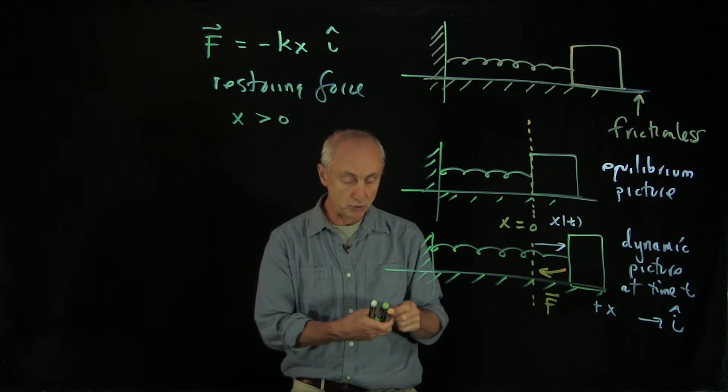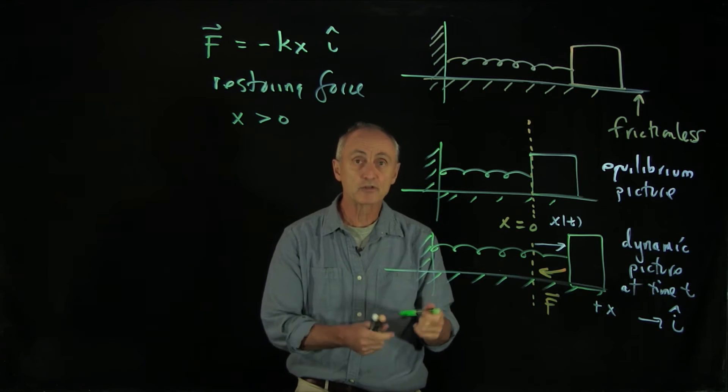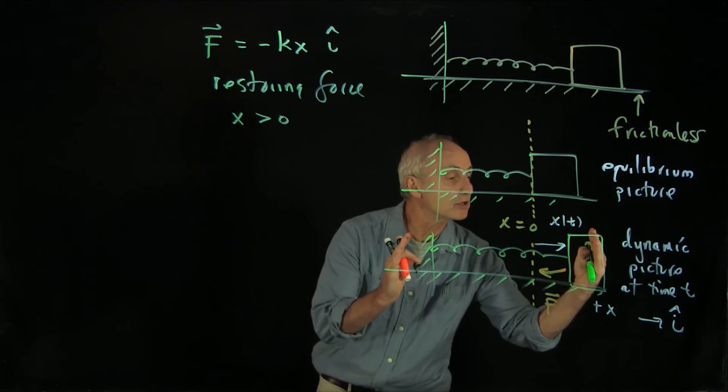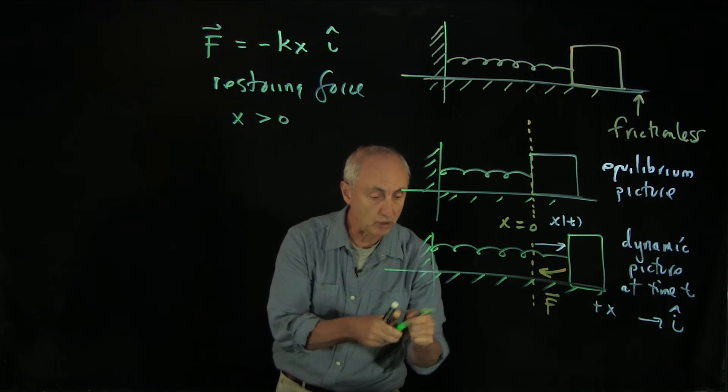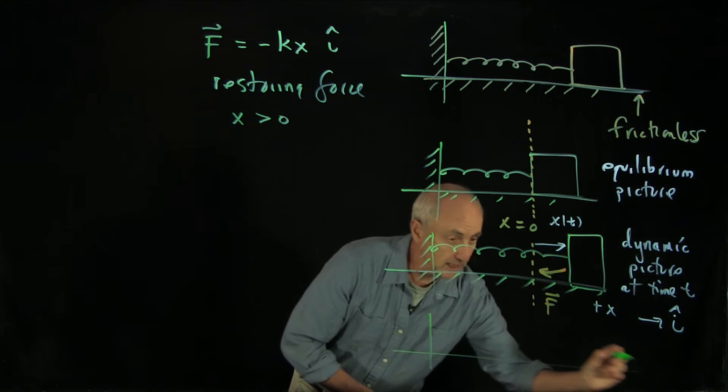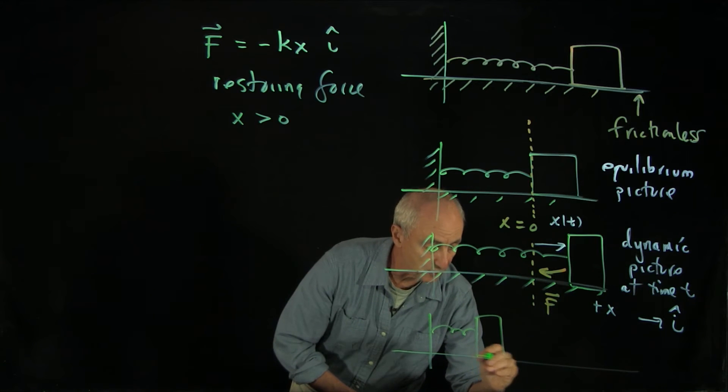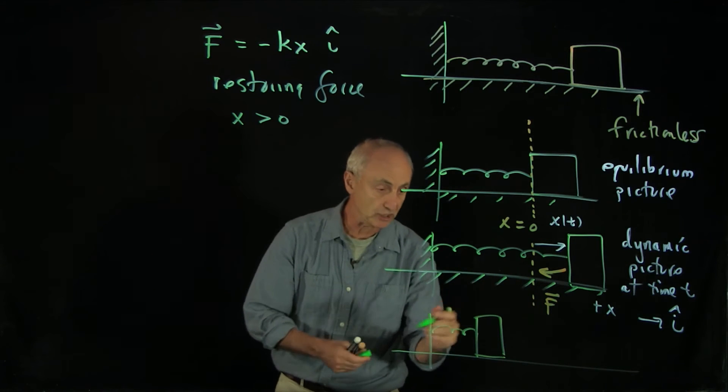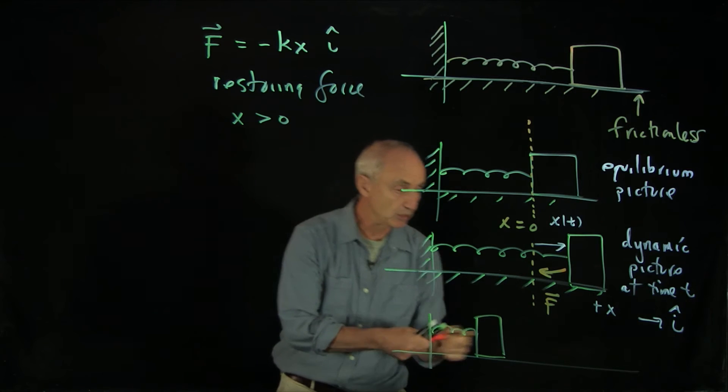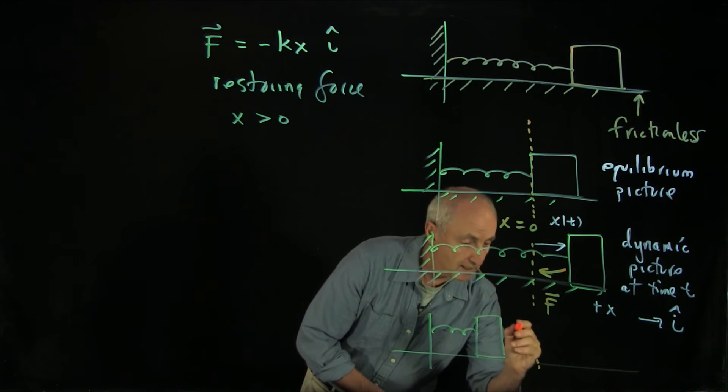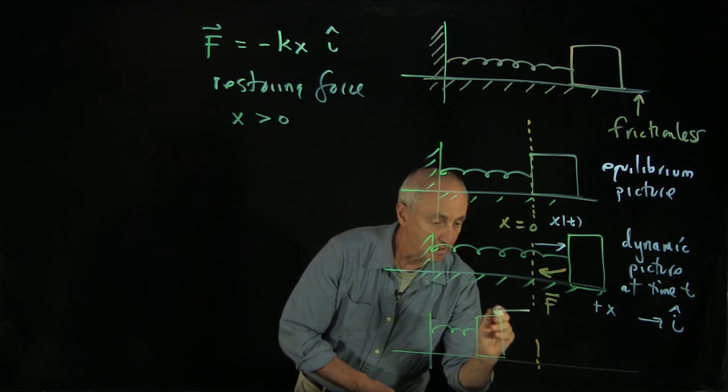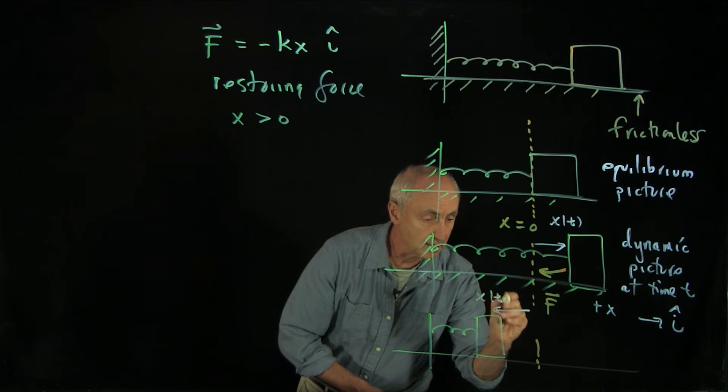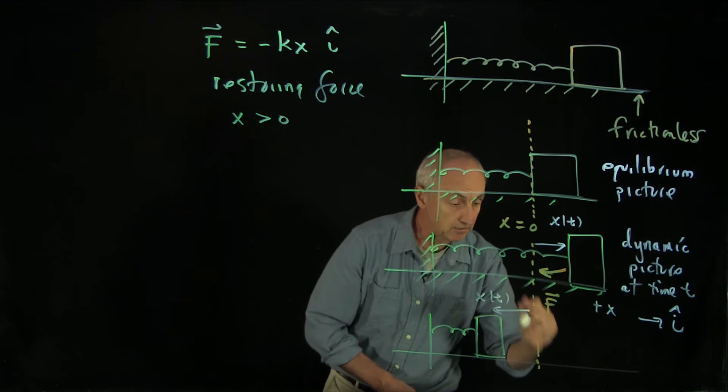Now suppose we drew another picture where the object is pushed in, compressing the spring. Let's draw once again a diagram and show the spring under compression from our equilibrium position. Here we have, again, that x of t. But in this case, x of t is negative.